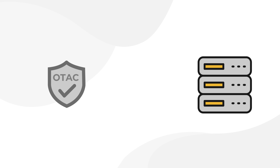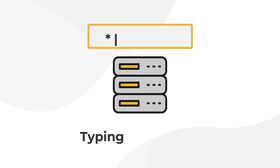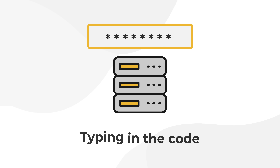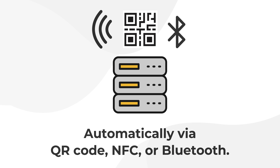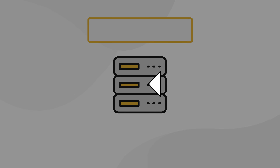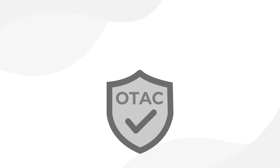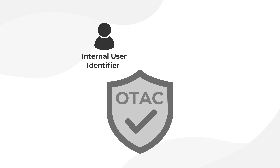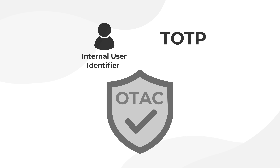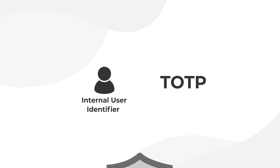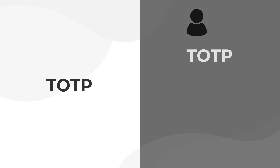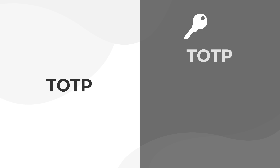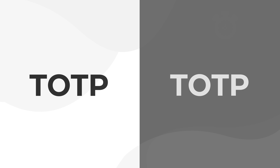The OTAC is then transferred over to the server — typically by typing in the code, or automatically by QR code, NFC, or Bluetooth. On the server side we do the reverse: we extract the user identifier and the TOTP from the received OTAC. The server then generates its own TOTP based on the user secret and the system time, and compares this with the TOTP received from the OTAC.